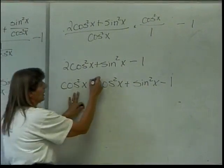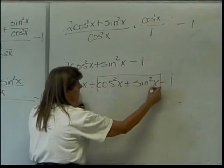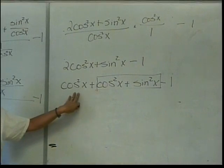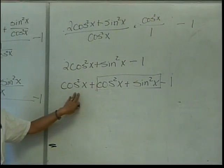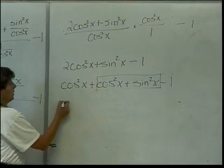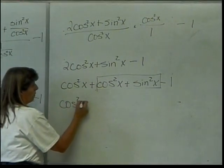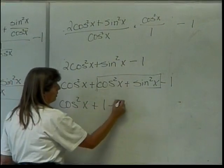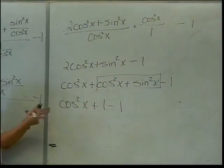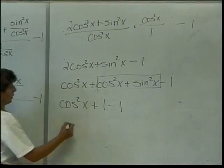Now, you want to take this thing. That's what she was wanting to get rid of. Cosine squared of x plus sine squared of x according to the Pythagorean identity is always 1. So, this then becomes cosine squared of x plus 1 minus 1 which simplifies to cosine squared of x.